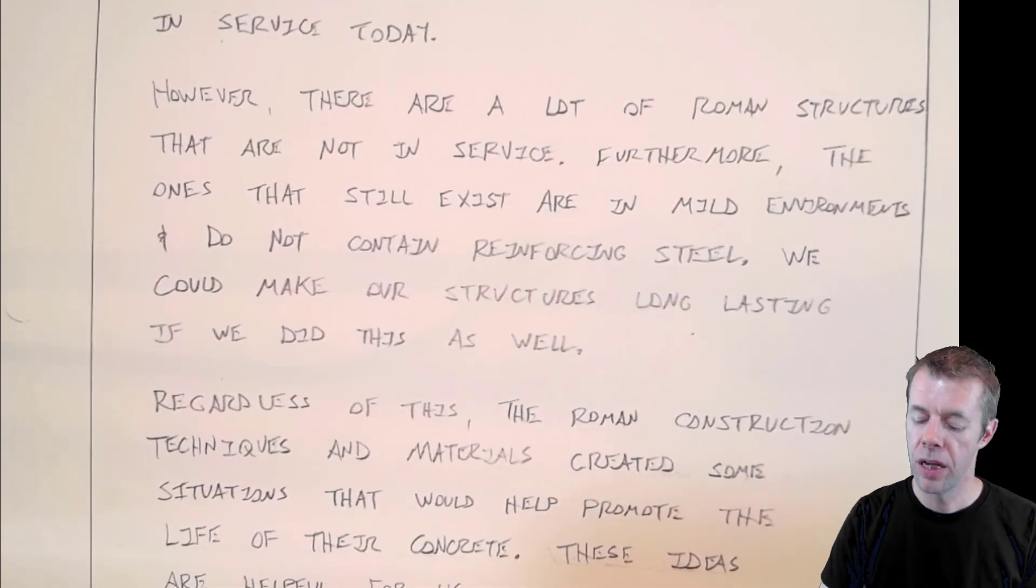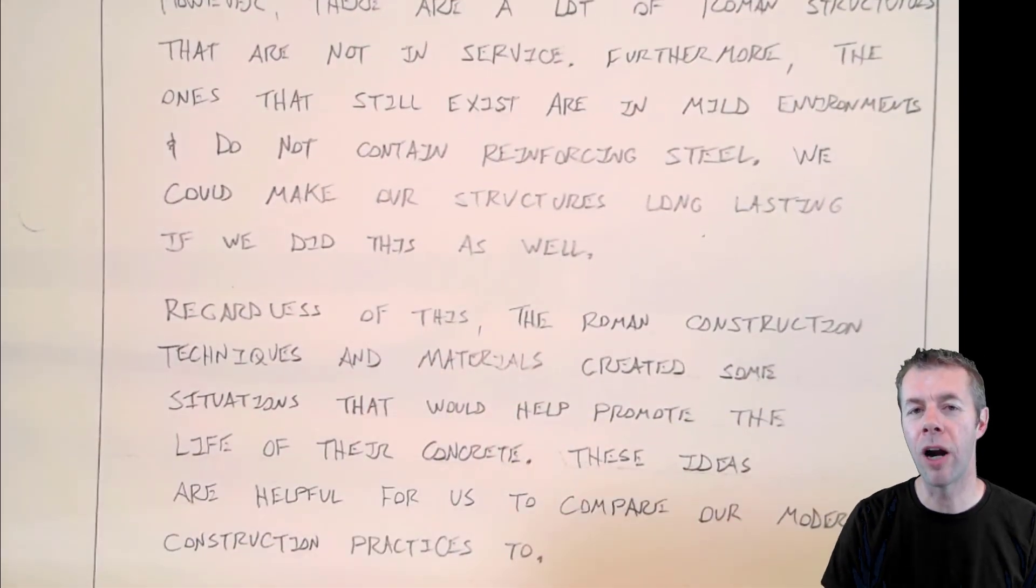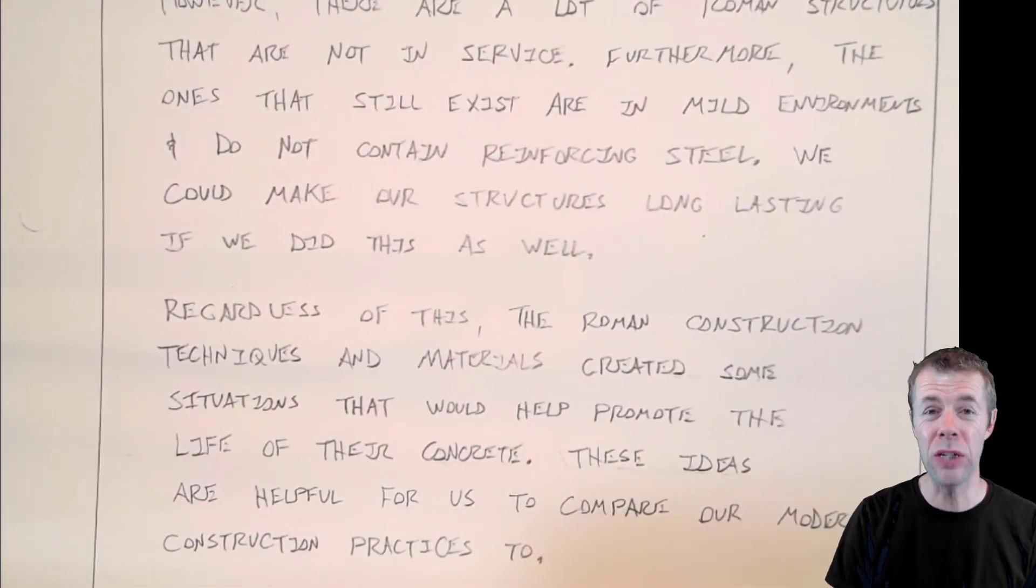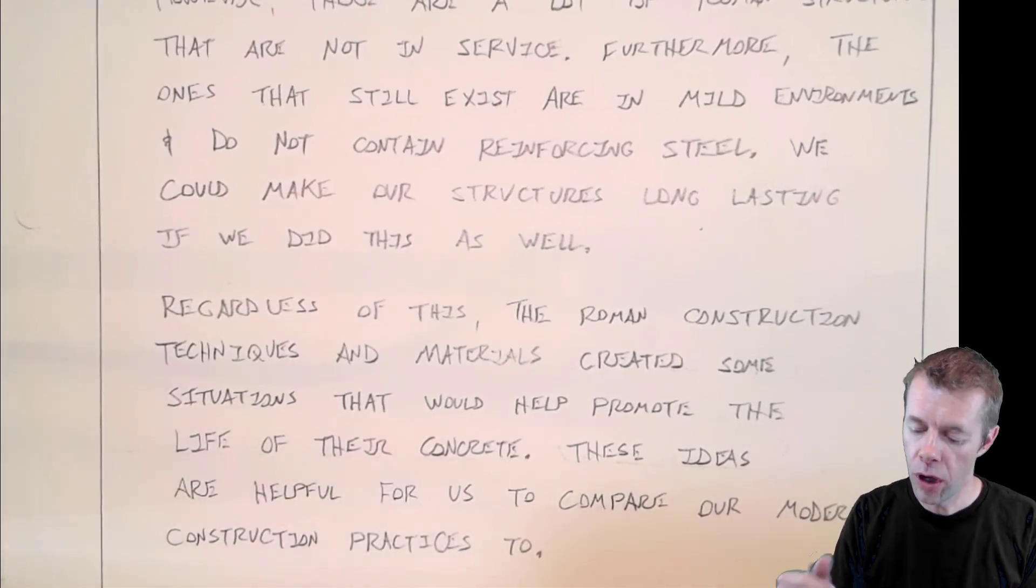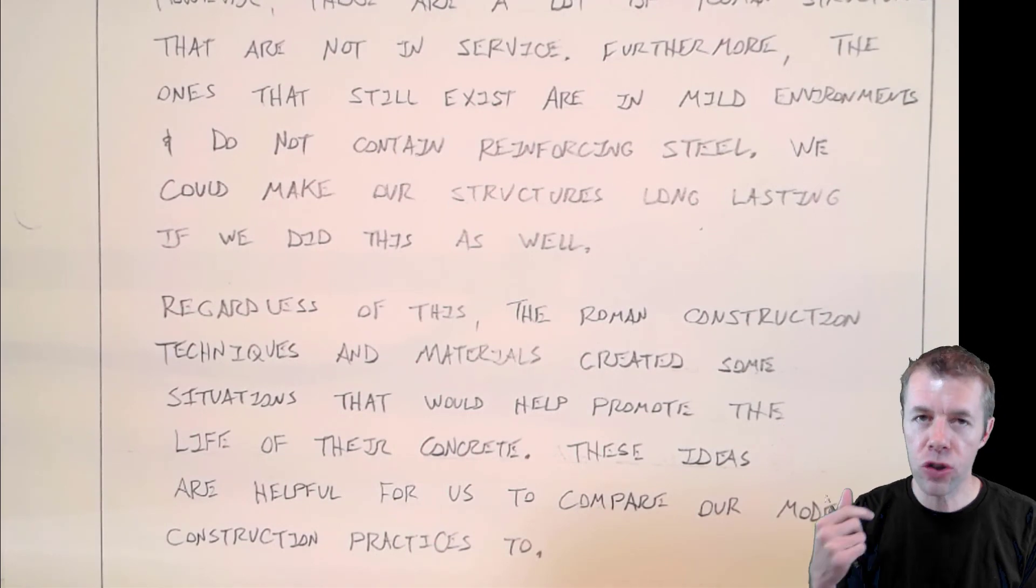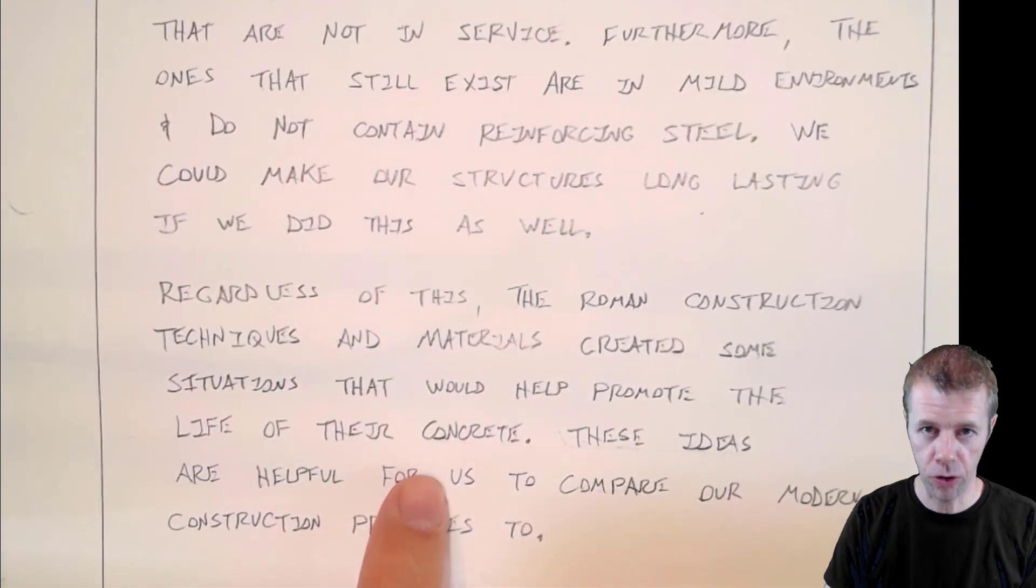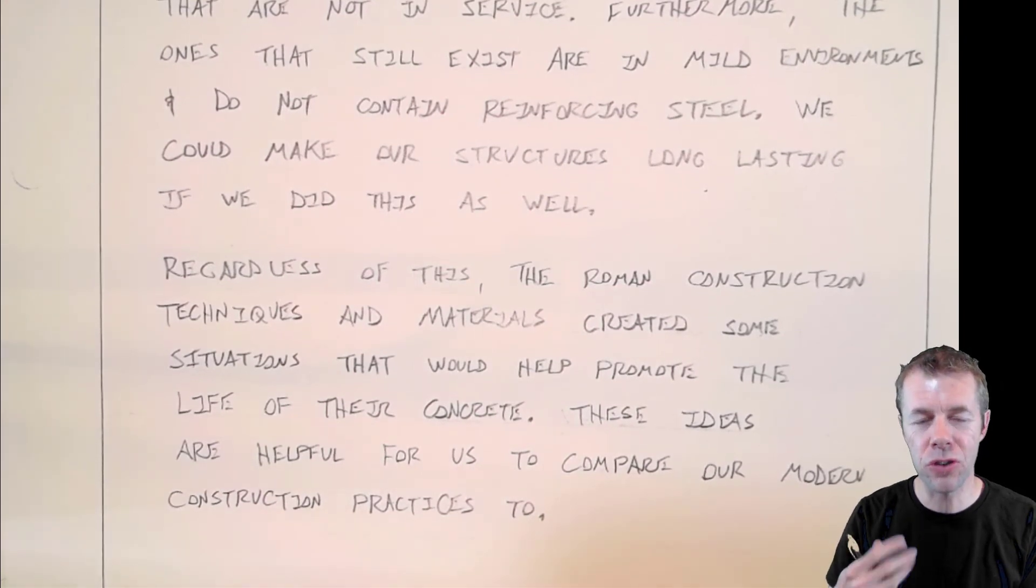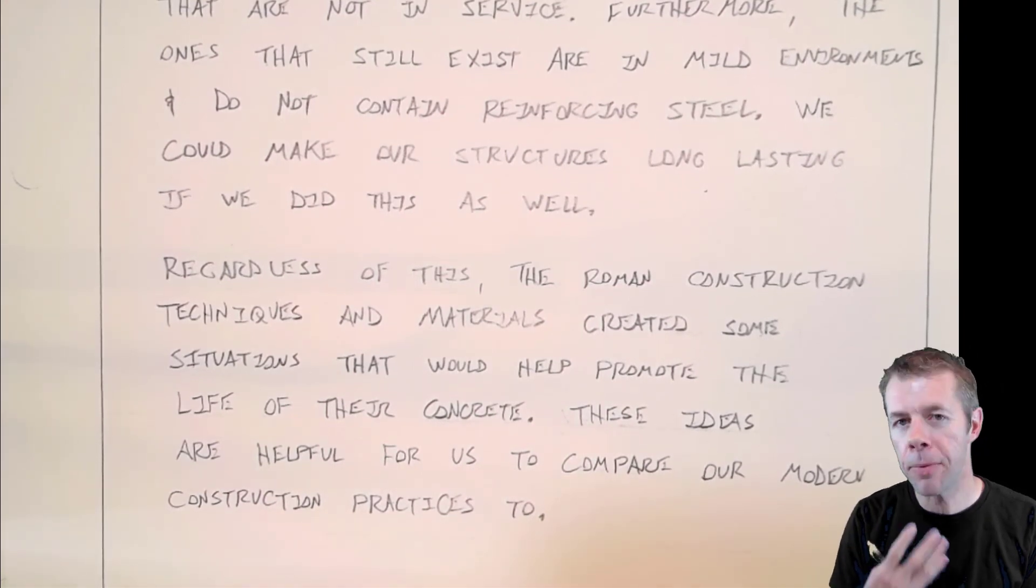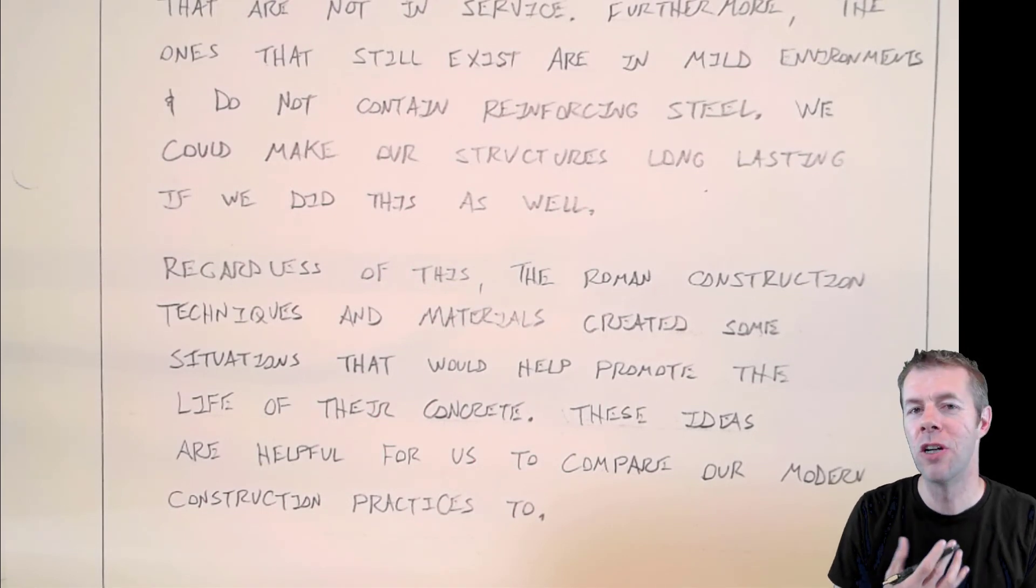But regardless of any of this, because we still sometimes have to build in these extreme environments. And we use steel inside of our modern concrete. It's a pretty good idea because concrete's not very strong in tension. So, it cracks. The Roman construction techniques and materials, though, created certain situations that could help promote the life of their concrete. And these ideas are helpful for us to compare to our modern construction practices. It's just good to think about, how do people do things in the past versus how we do them now? And does it make sense? Are we doing things the right way?